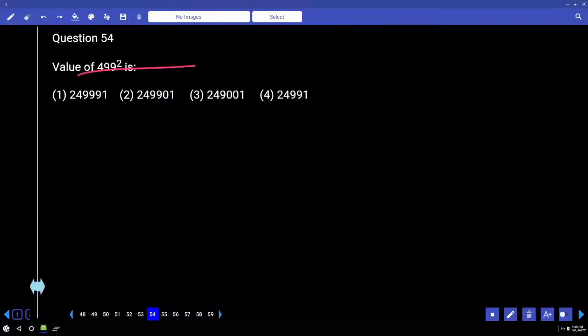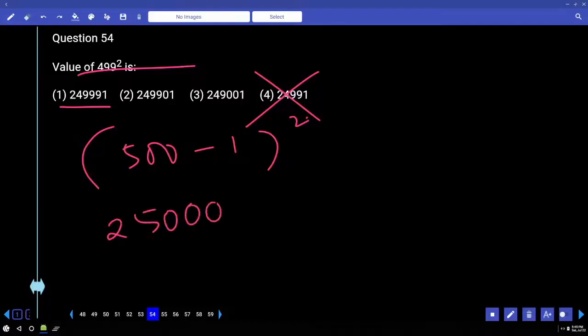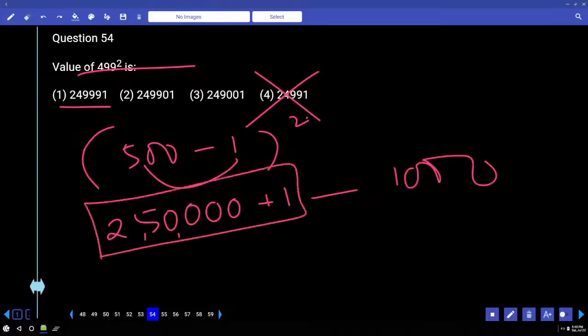5008 square. 5008 minus 1 whole square. Here you have to eliminate options here. This is equal to a-b whole square. A square is 2,500,000. 2,500,000 plus 1 minus 2AB. 1000. That means 2AB means 1000. 2,500,000. Option 3. 2,49,001.